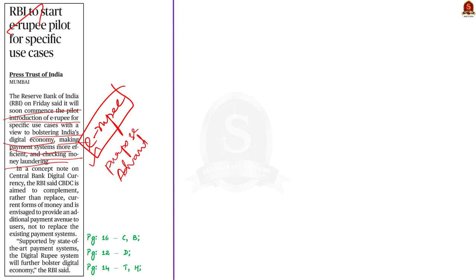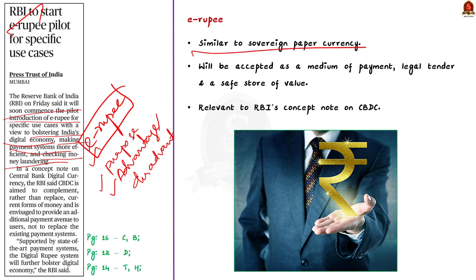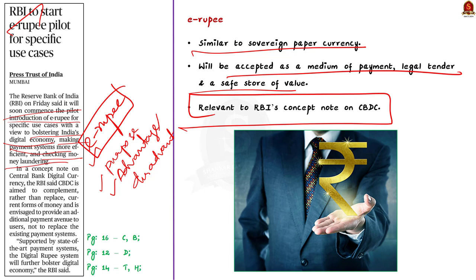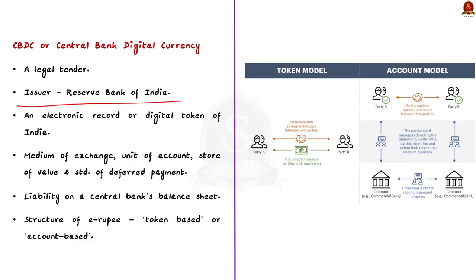E-Rupee is similar to sovereign paper currency but in a different form. It is exchangeable at par with the existing currency and will be accepted as a medium of payment, legal tender, and a safe store of value. E-Rupee is relevant to the RBI's concept note on Central Bank Digital Currency (CBDC). CBDC is a legal tender issued by the Reserve Bank of India — an electronic record or digital token that serves as an official currency fulfilling the basic functions of a medium of exchange, unit of account, store of value, and standard of deferred payment.